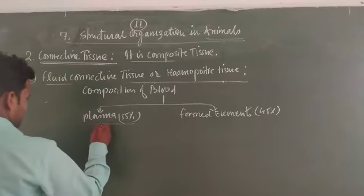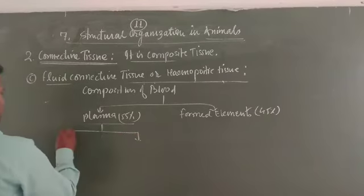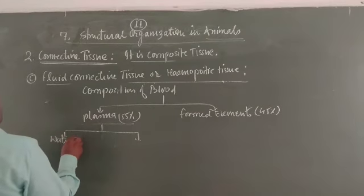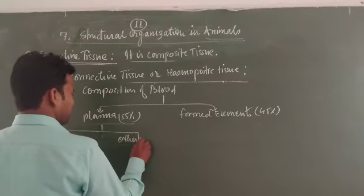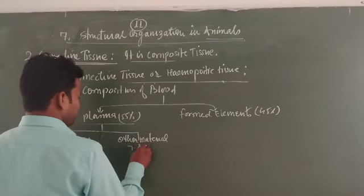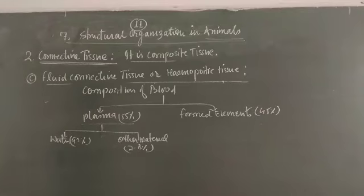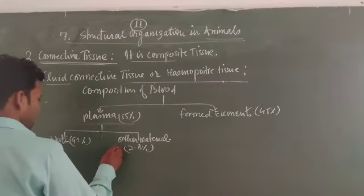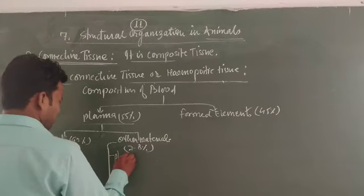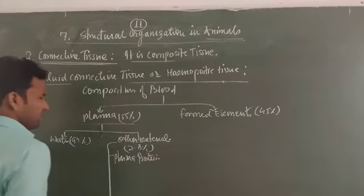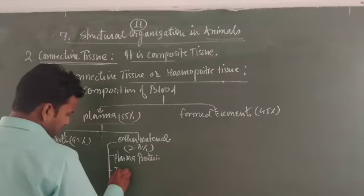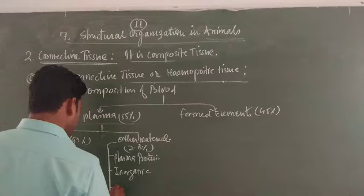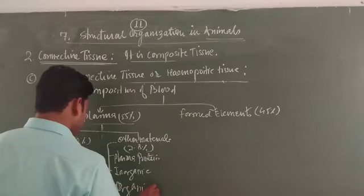Various materials found inside the plasma in dissolved form include water and plasma proteins. The plasma has many proteins. Various types of inorganic and organic compounds are present in the plasma. The names of proteins present inside blood plasma are albumin, globulin, and the third important blood protein called fibrinogen. The presence of fibrinogen in plasma is noted, but in serum, fibrinogen is totally absent, which is why serum does not participate in the coagulation of blood.